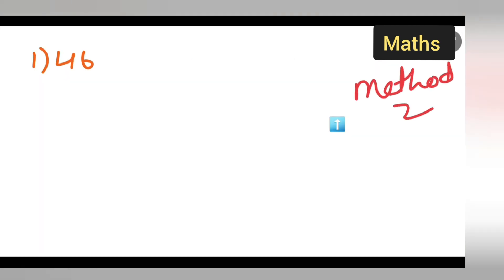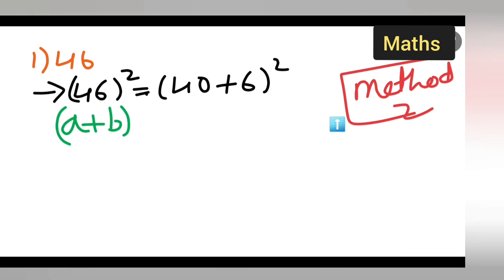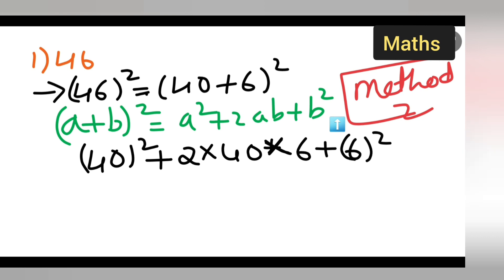For method 2 of 46 squared, write down 46 square equals 40 plus 6, the whole square. We apply the formula: a plus b, the whole square, equals a squared plus 2ab plus b squared. So write down 40 squared plus 2 multiplied by 40 multiplied by 6 plus 6 the whole square.